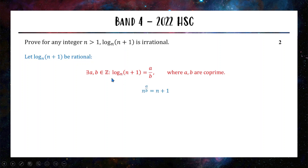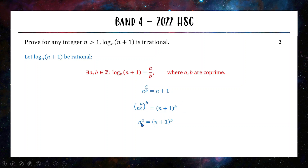We take the expression and rewrite it as an exponential equation: n to the power of a/b equals n+1. Then we raise both sides to the power of b — on the left, the powers multiply and the b's cancel, leaving n^a; on the right we have (n+1)^b. Now the tricky part: if n is an odd number, then n+1 is even. Any power of an odd number is also odd — 3, 9, 27 are always odd. So if n is odd, the left hand side n^a is always odd, but n+1 is even so (n+1)^b is always even — they can never be equal. Vice versa, if n is even, the left hand side is always even and the right hand side is an odd number to a power, so it's always odd.